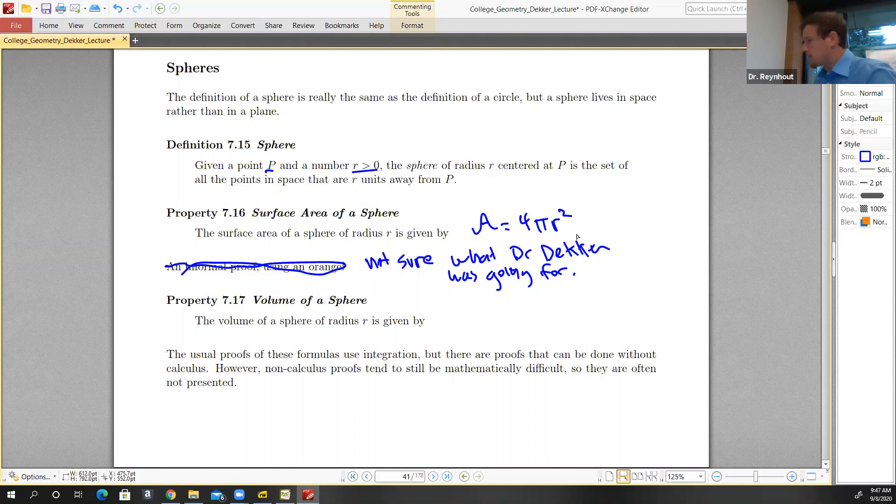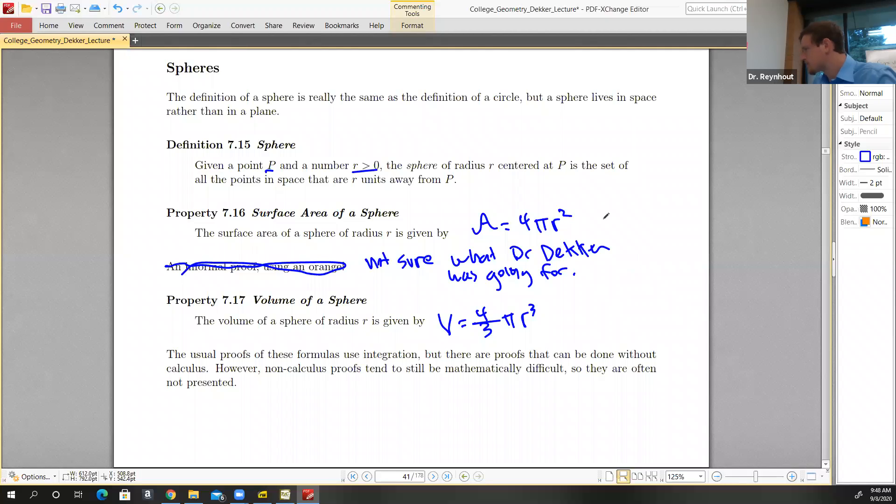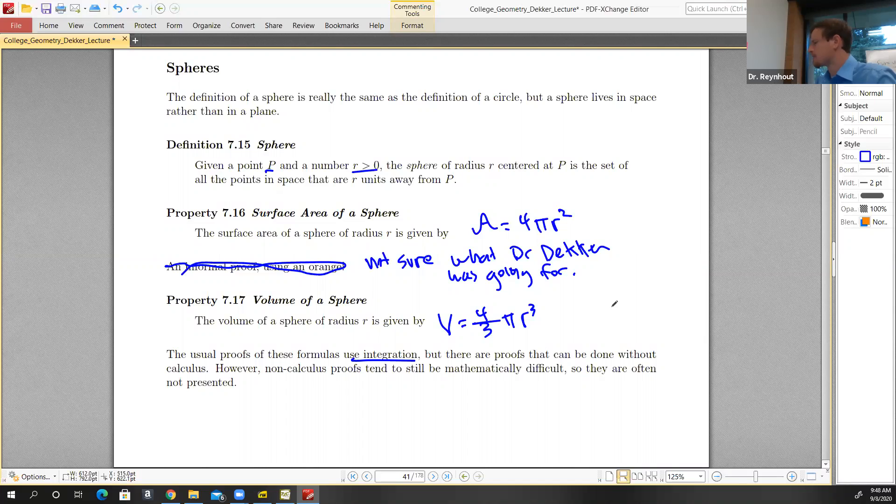The volume of a sphere of radius r is given by volume equals 4/3 πr³. The proofs of these formulas typically use integration, which are probably the methods that I would prefer, to be honest.